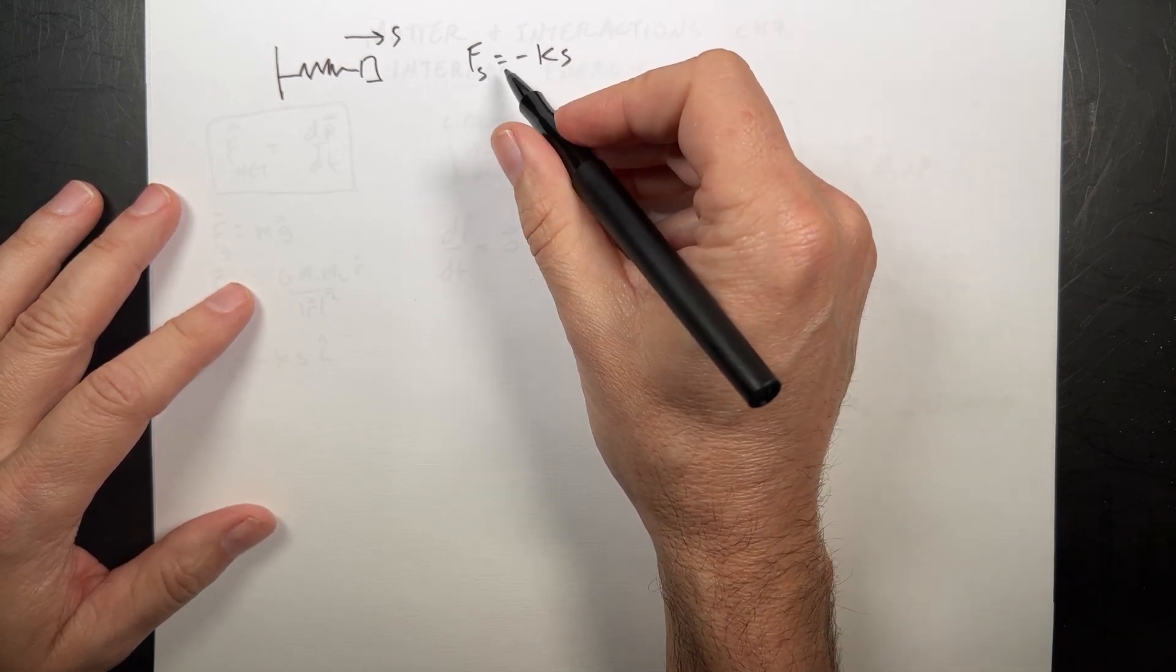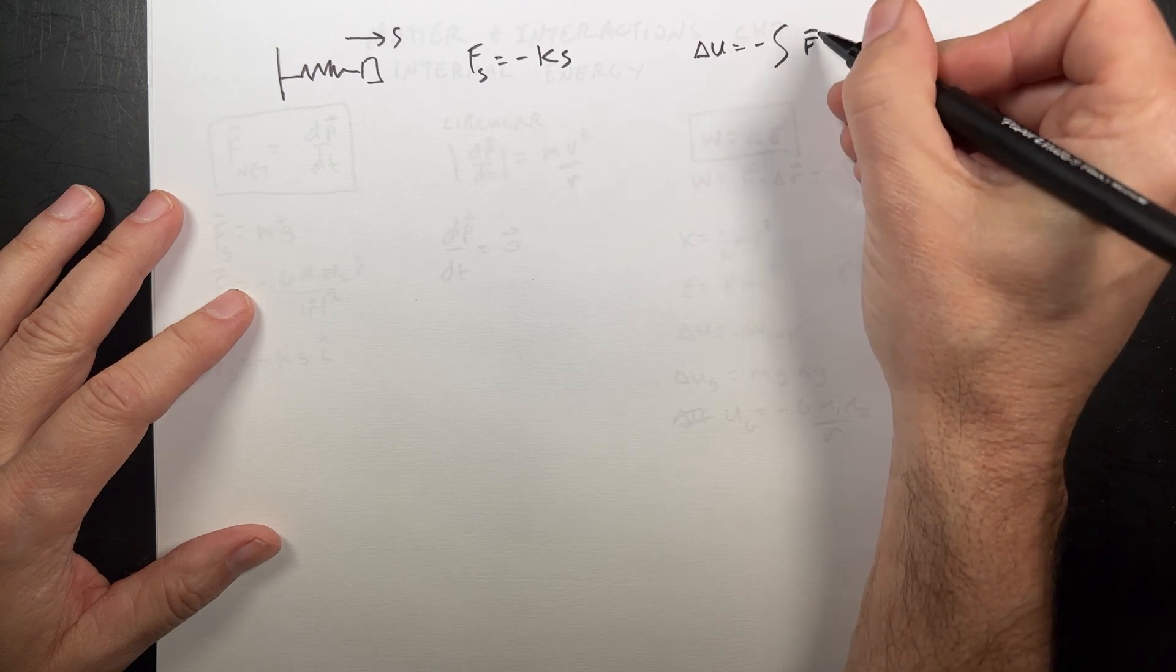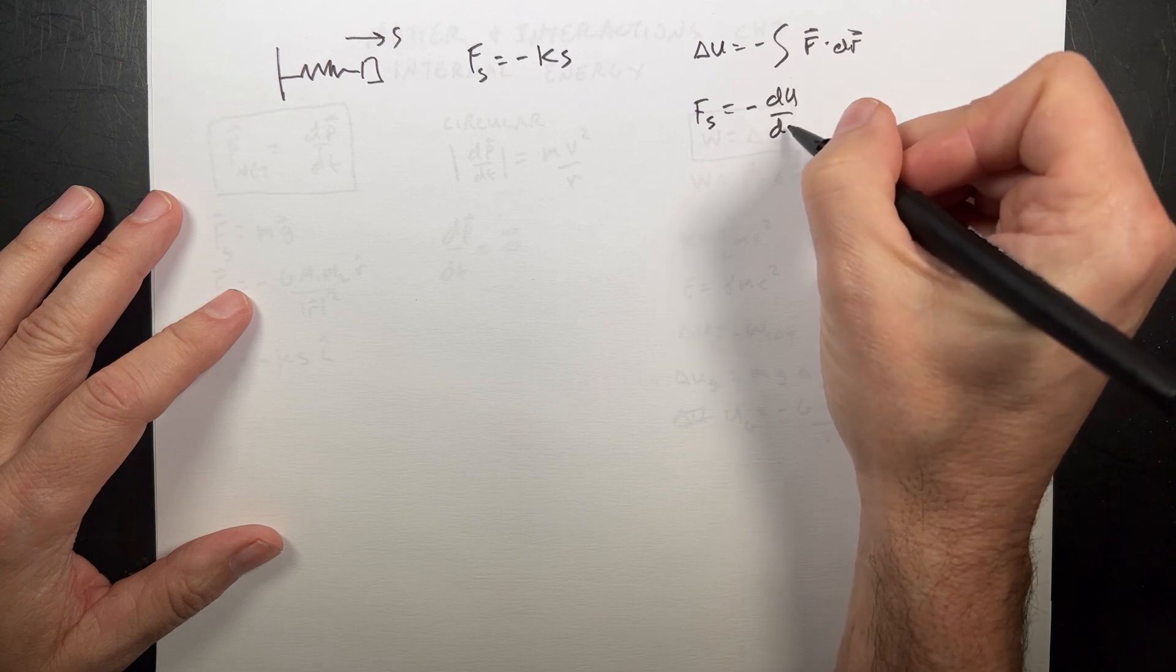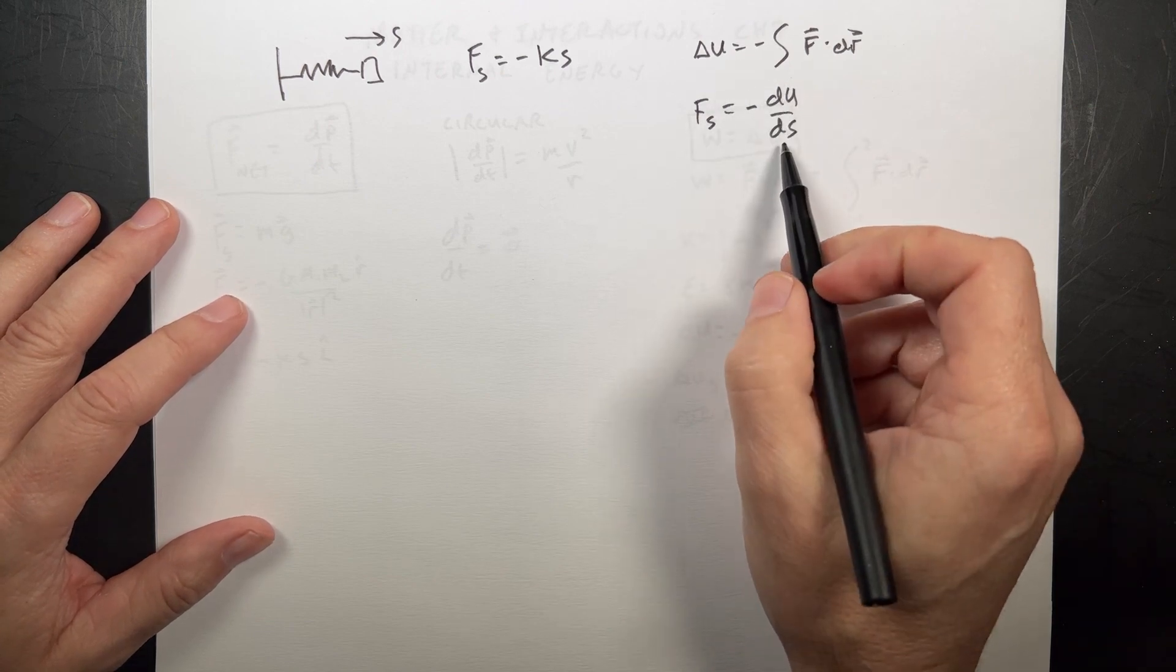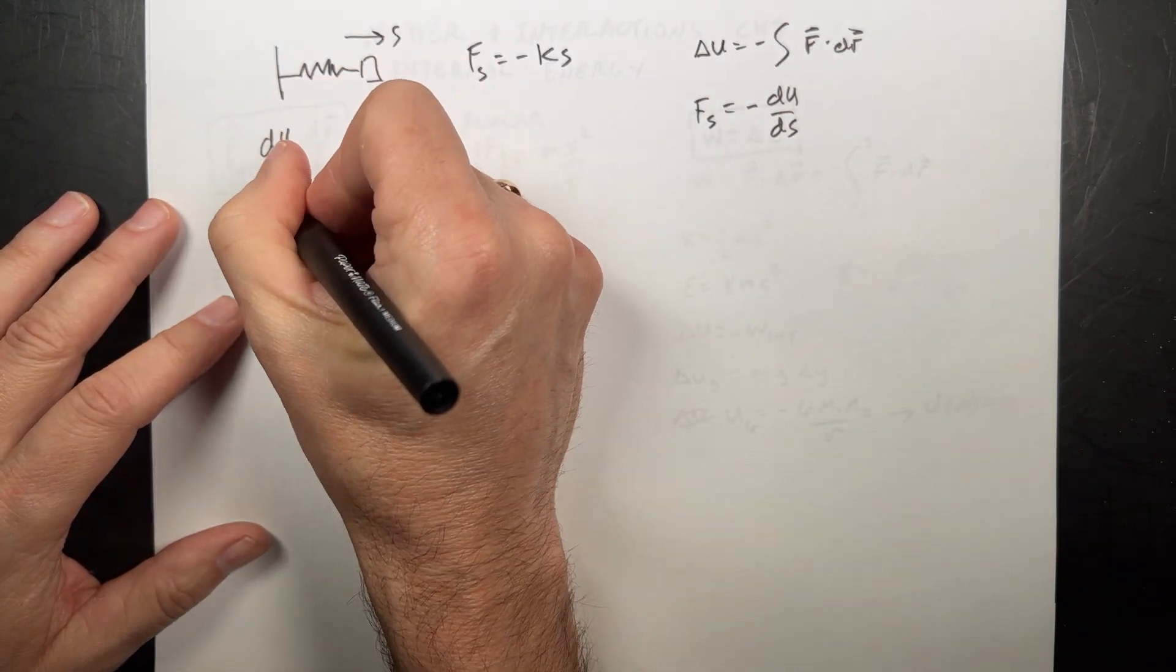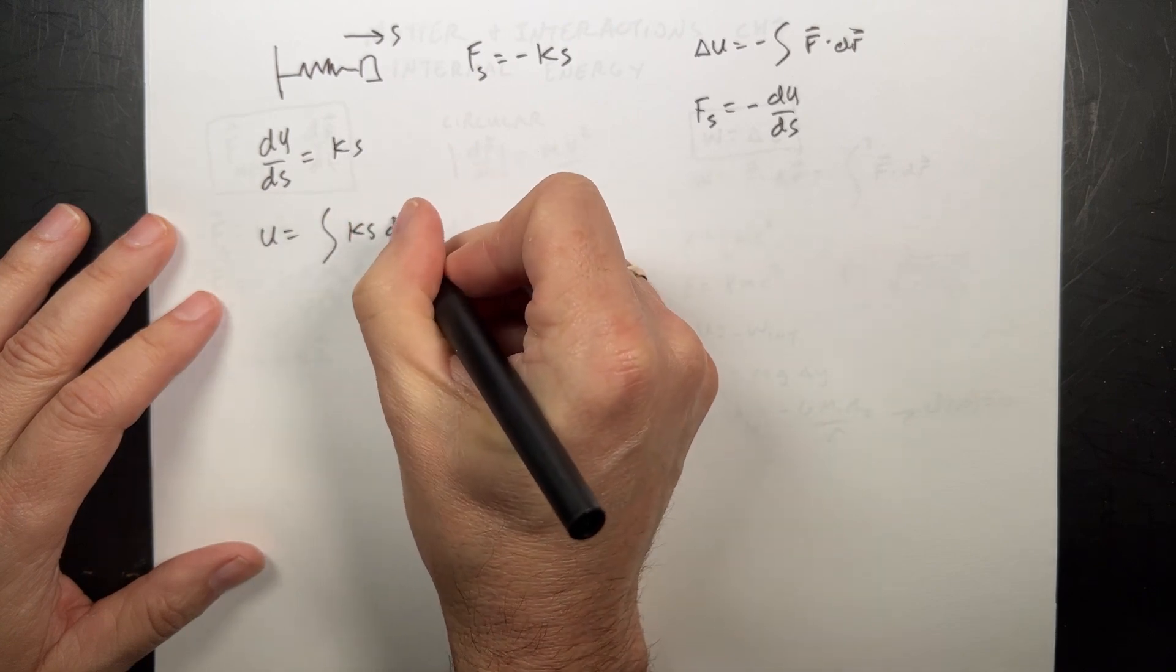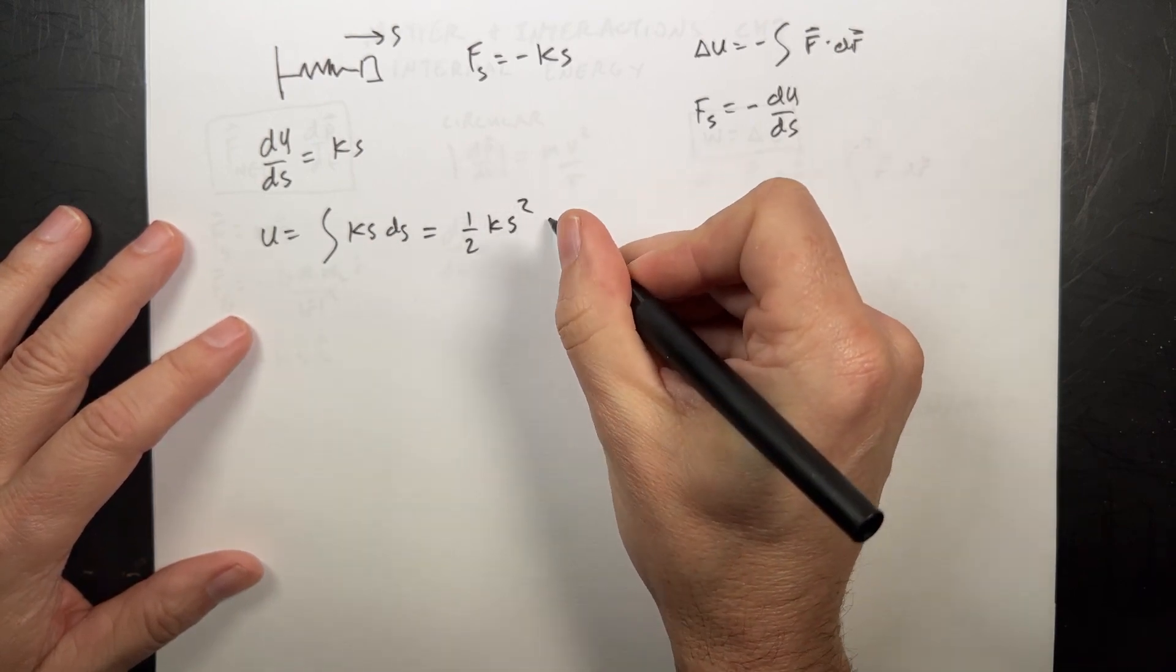Since the change of potential is negative the integral of f dot dr, I can write fs is negative du/ds. So the force is negative the derivative of that potential with respect to s. If I write that, the negative sign cancels, du/ds is ks. I can multiply both sides by ds and integrate to get u as the integral of ks ds, which is one half ks squared plus a constant.